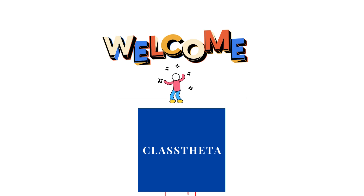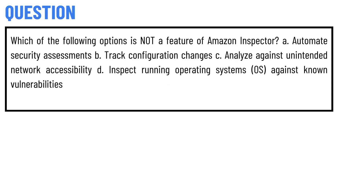Today's question is: which of the following options is NOT a feature of Amazon Inspector? Option A: automate security assessments. Option B: track configuration changes. Option C: analyze against unintended network accessibility.